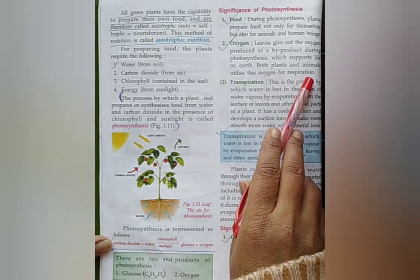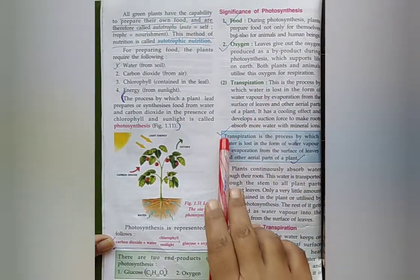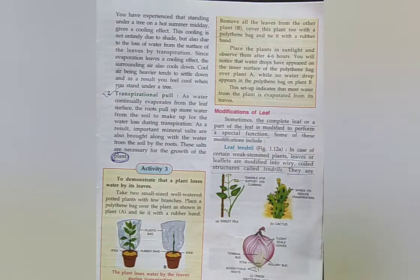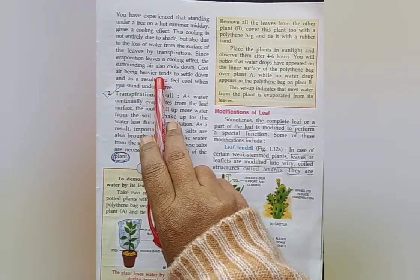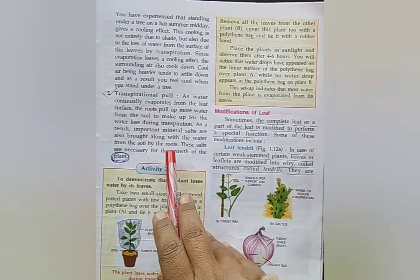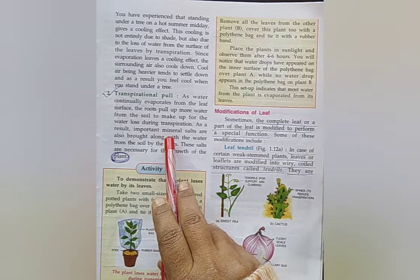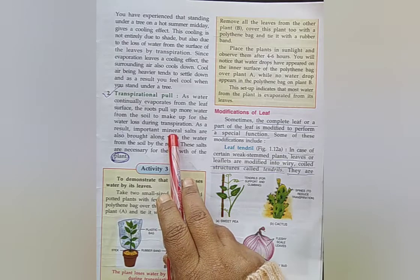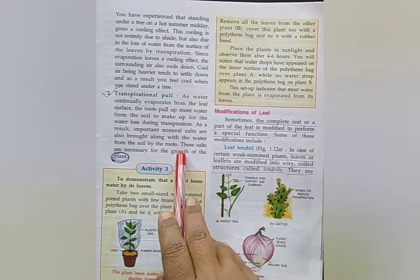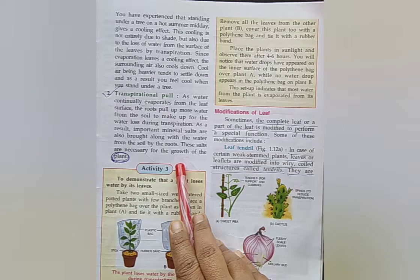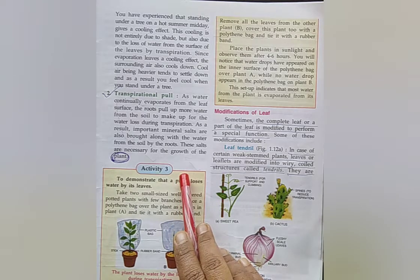What is transpiration? Next question: Write the significance of transpiration. Cooling effect. Transpirational pull. Cooling effect answer: The water keeps on evaporating from the leaf surface during transpiration. Evaporation leaves a cooling effect in the surrounding area of a tree. Transpirational pull: Make up the water loss during transpiration. Important mineral salts are also brought along with the water from the soil by the roots.